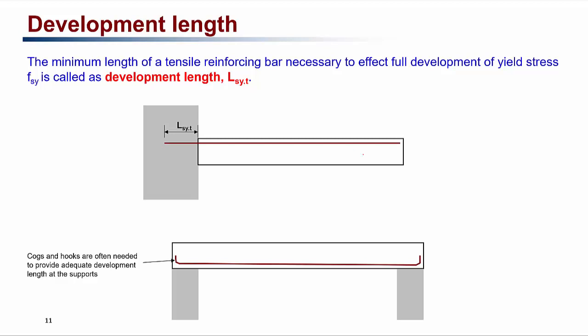For a cantilever beam, the steel is in tension at the support. If we do not provide enough embedment of the reinforcement into the support, the bar can get pulled out before it yields. For the bar to yield at that point, we need enough development length lsy.t. Similarly, for a simply supported beam, even though the tensile stress at the bars is small at the support, we still need enough development length so the bar doesn't get pulled out.